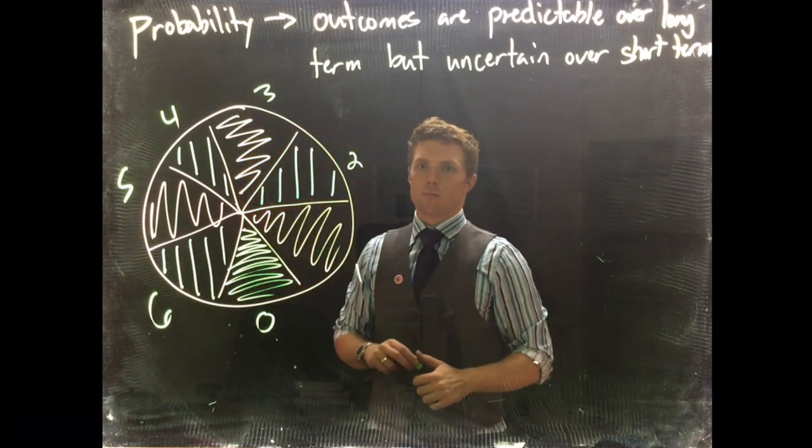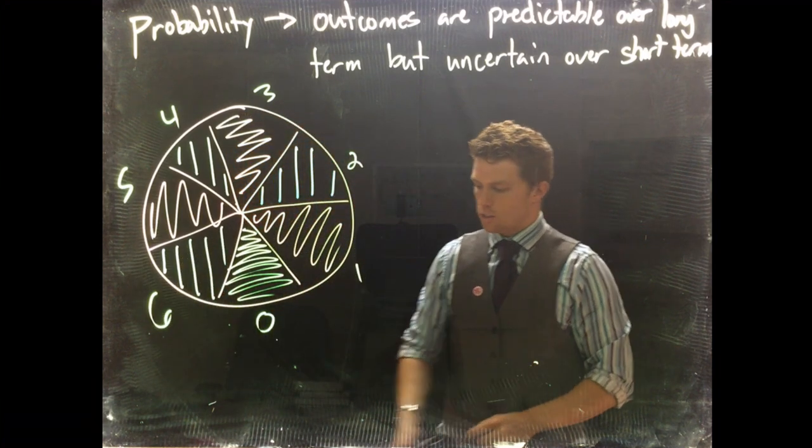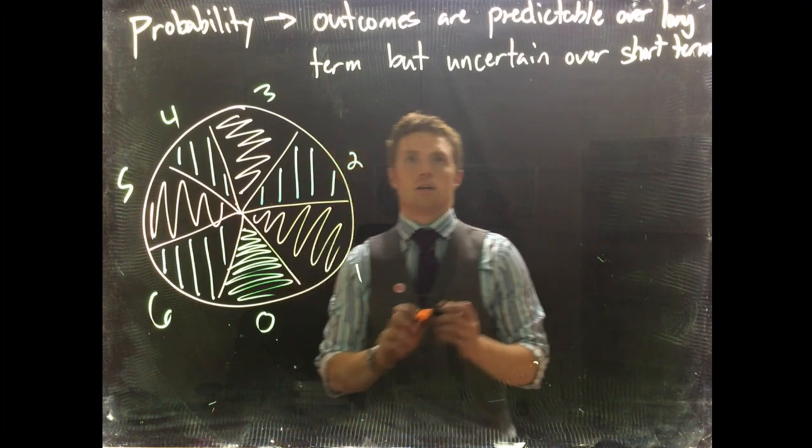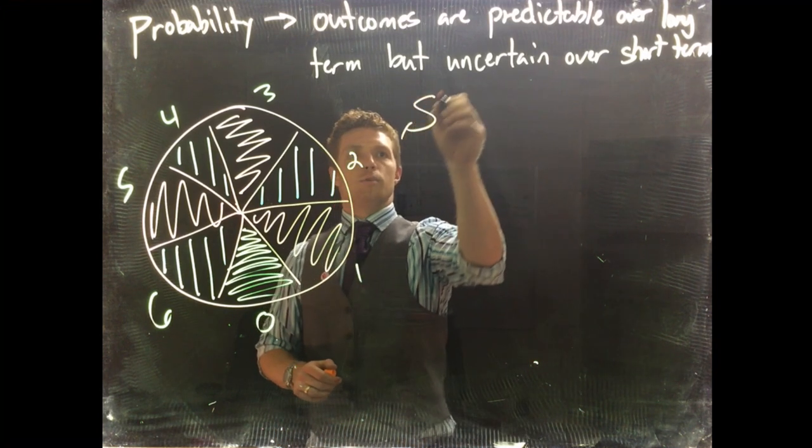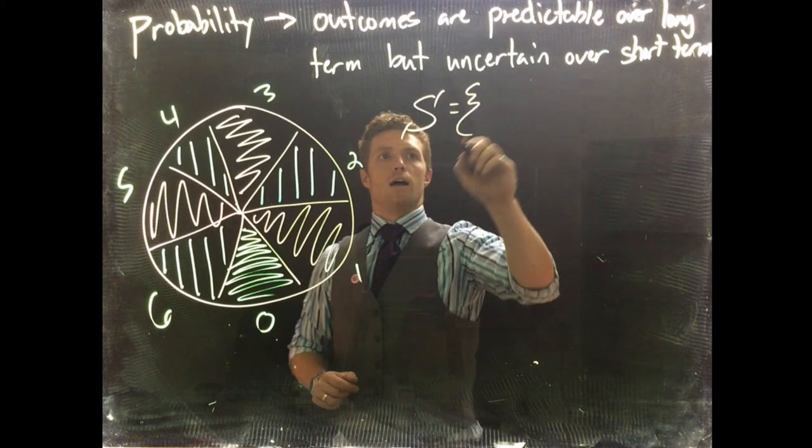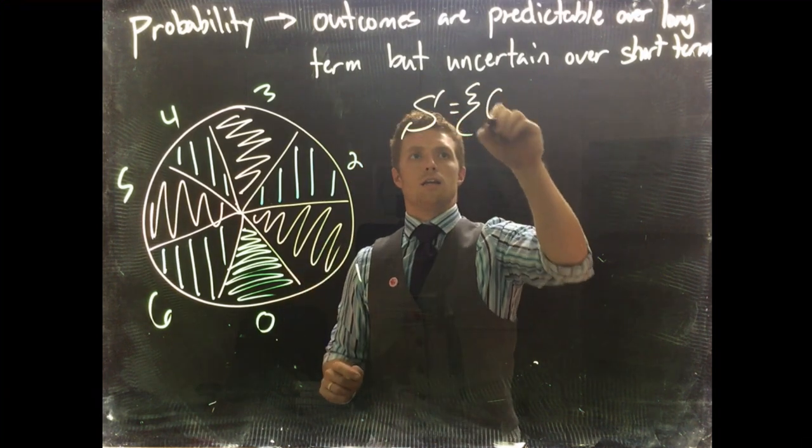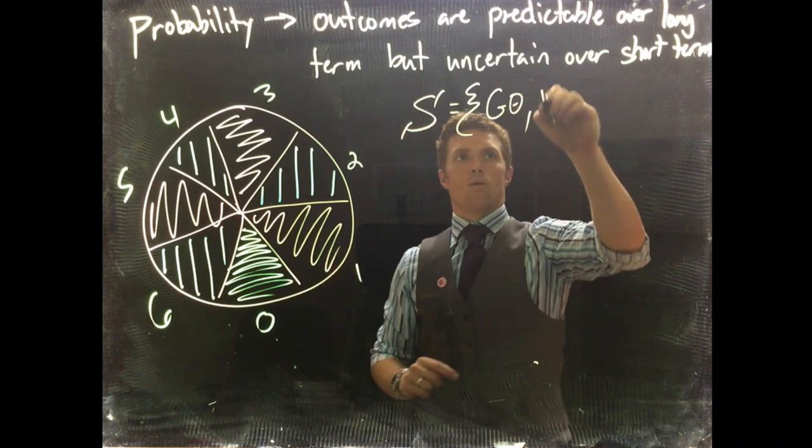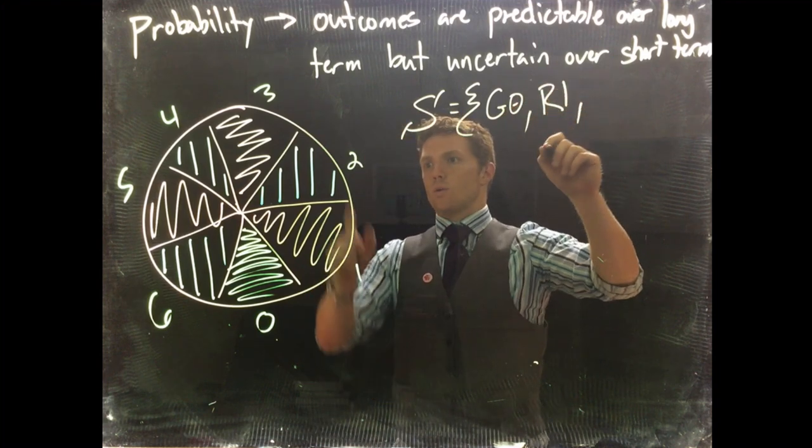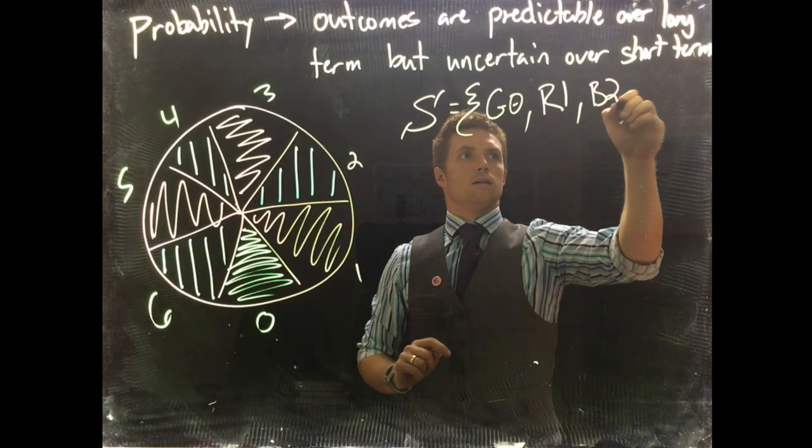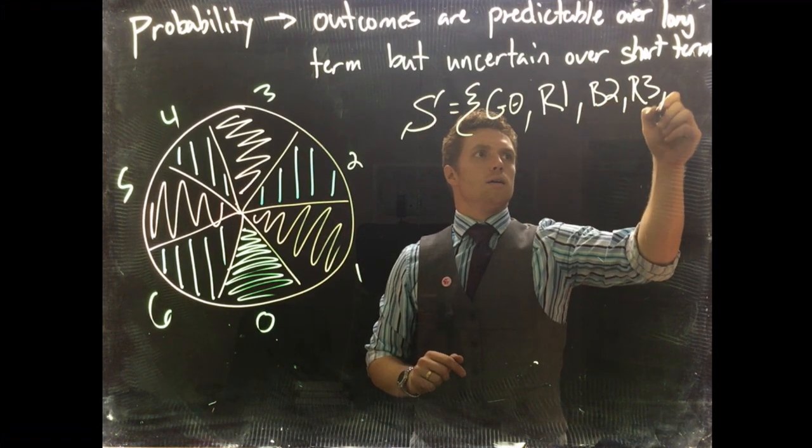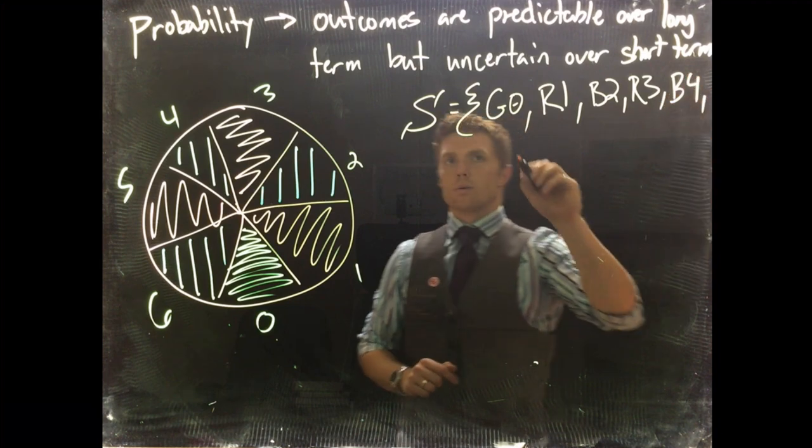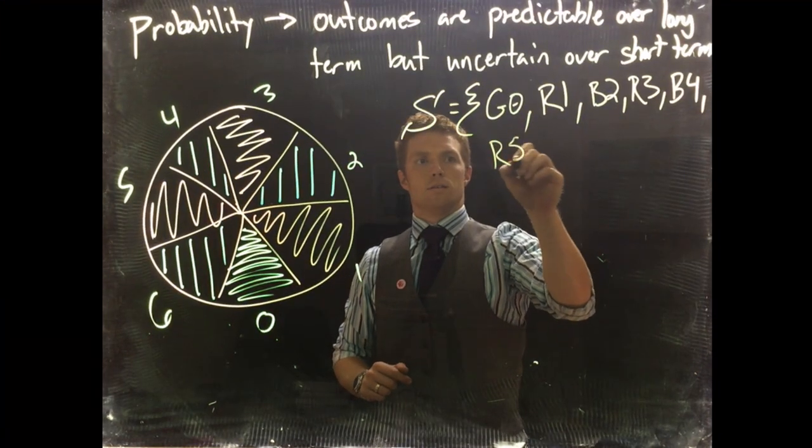Okay, so we're going to make our simplified roulette table. Let's first start off with the sample space. Let's determine all possible outcomes. So we've got our sample space S, and for us we're going to have green zero, we're going to have red one, we're going to have blue two.